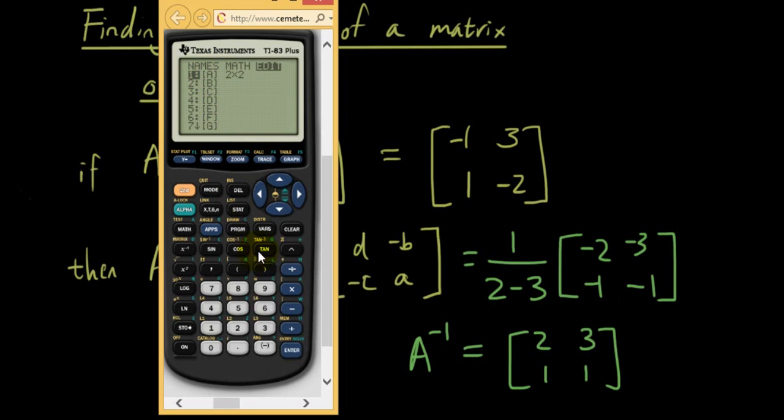I'm going to enter in matrix A, so press enter. Matrix A is going to be this matrix. Let's put in here 2 by 2, so 2, enter, 2, enter. This is the dimension of the matrix. If you put in 3 by 3 for example, you can put in a 3 by 3 matrix.